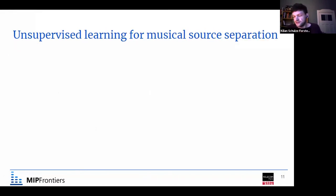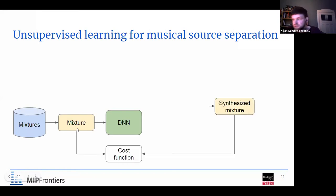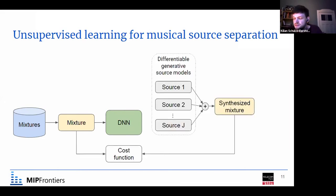Now I'd like to talk about the second part: unsupervised learning for musical source separation, where we only have mixtures and no ground truth signals. Our strategy is to re-synthesize the mixture signal so that we can compare it to the true mixture and update our neural network accordingly. We use explicit, differentiable, and generative source models. We assume we know the number of sources and model each with generative models — if we estimate the parameters of all sources correctly, we can re-synthesize each source, mix them together, and in the best case, recover the original mix.